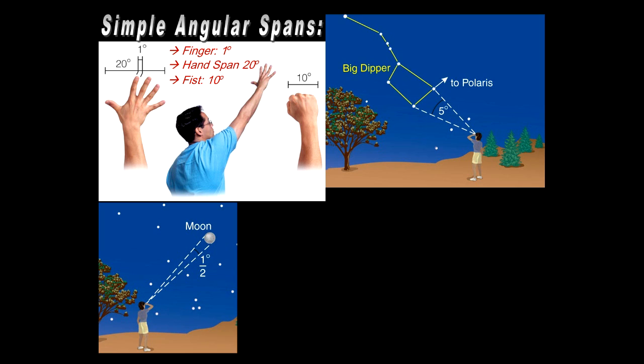The hand span is 20 degrees and the fist is about 10 degrees. So that gives the ability to quickly make significant angular measurements across the sky. So you want to go, say you're wanting to go 30 degrees up from the horizon, about three fists stacked on top of each other will get you there. That's pretty cool.